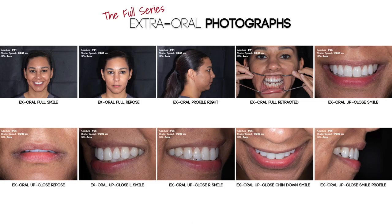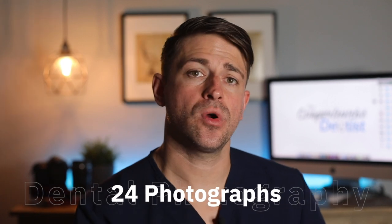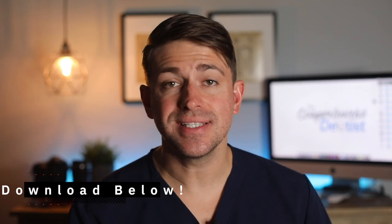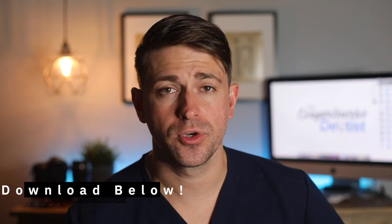For comprehensive cases that involve any anterior aesthetic treatment, I will choose to take the full series option of photographs. This series includes extra oral images and intraoral images. The full series consists of a total of 24 shots — 10 extra oral and 14 intraoral photos. You will notice that some of the basic 12 are also in the full series, which is correct. I pick either the basic 12 series or the full series for my specific patients. I have put a link to download these examples in the description below to help you decide what photos you may like to take for your practice.